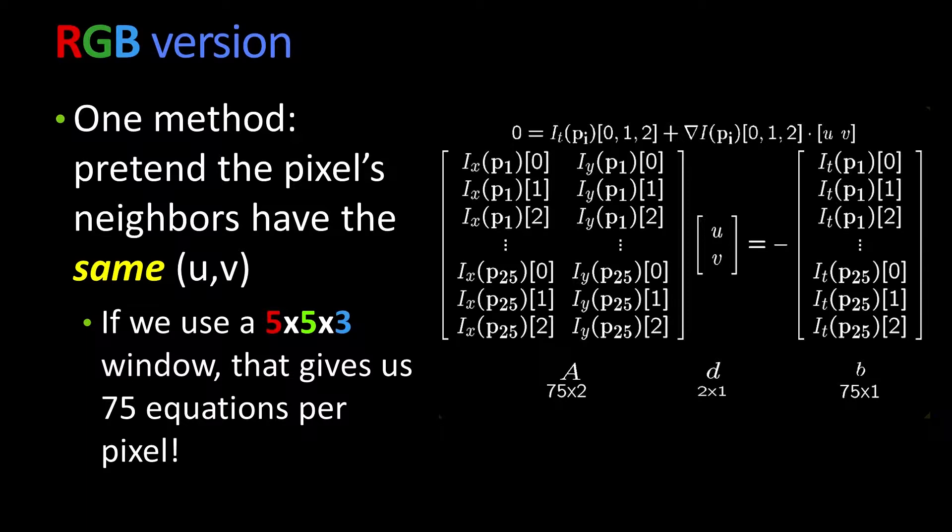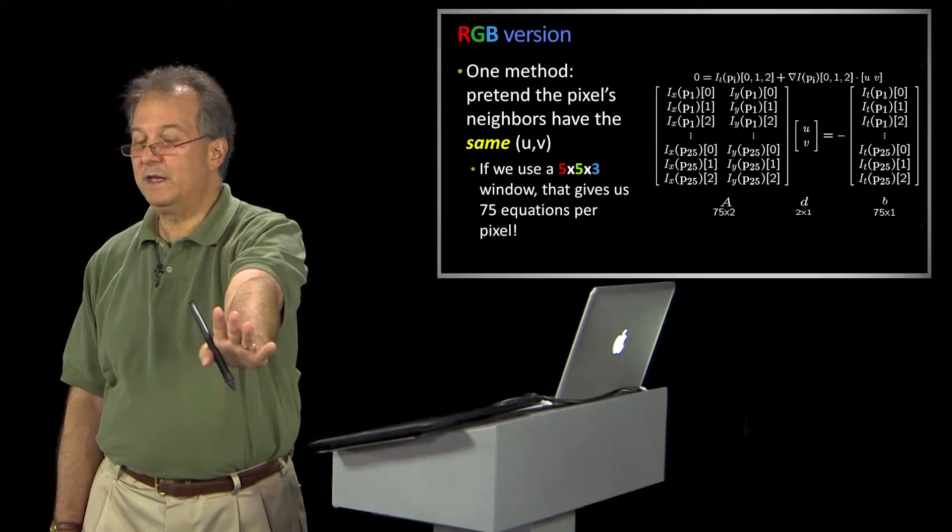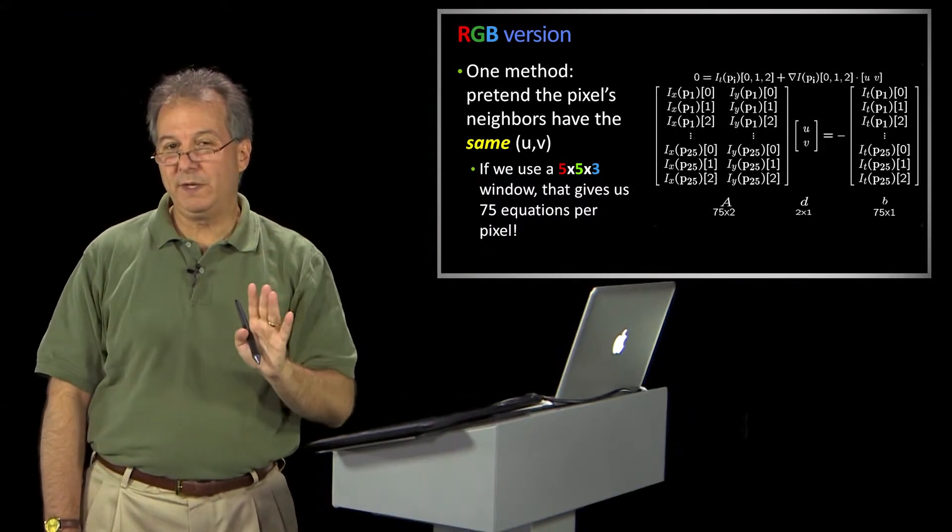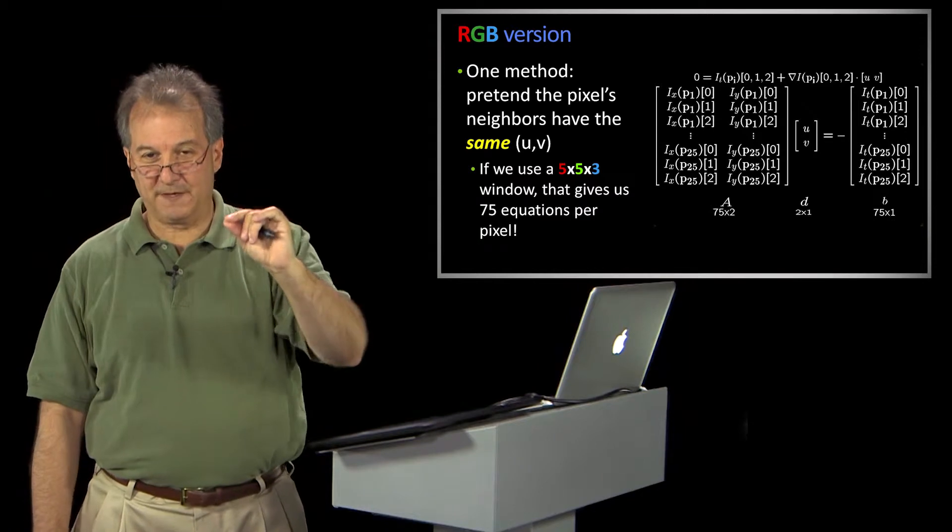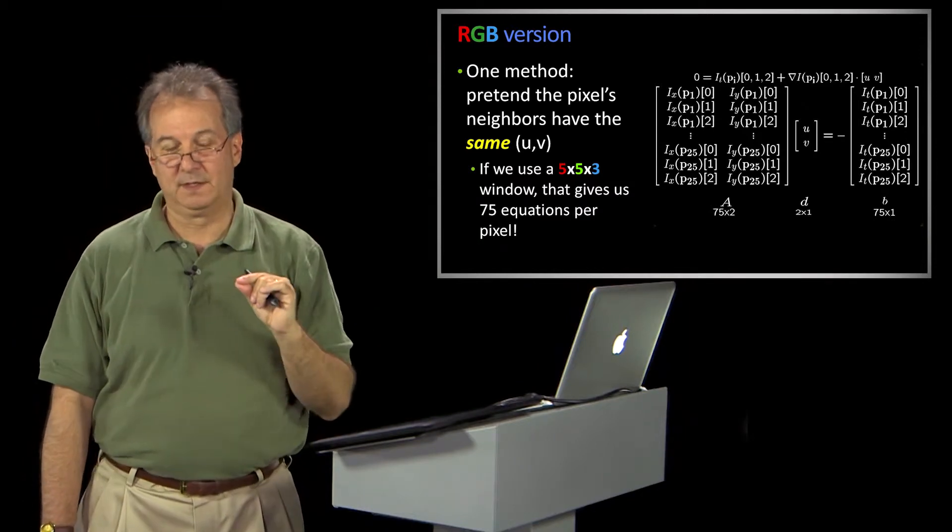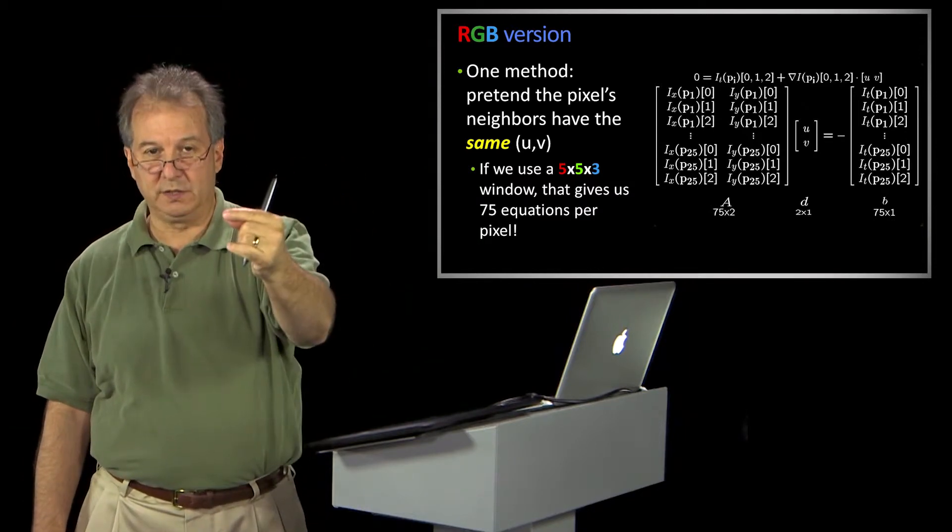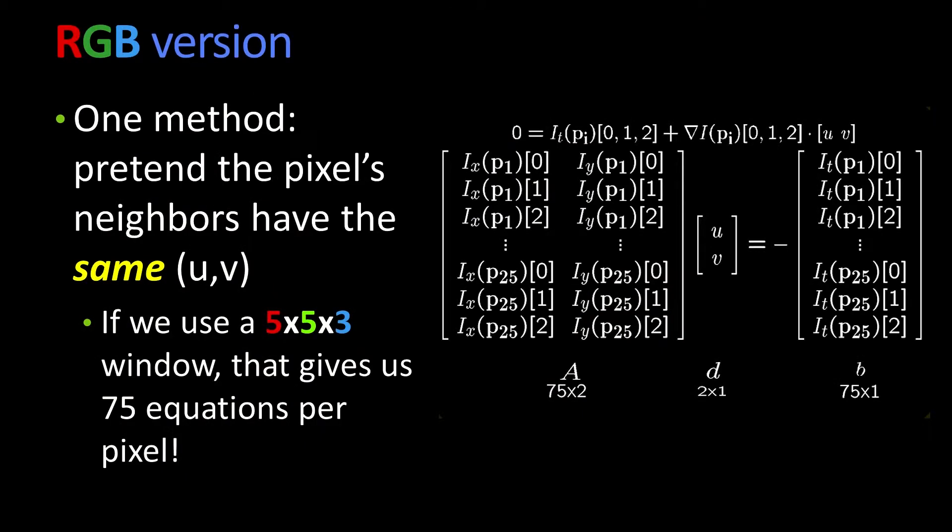Now, if you're really shrewd, you might say, wait a minute, wait, wait, wait. Suppose my window was only a single pixel. You told me, Professor Bobic, that we had this problem, okay? That we had one equation and two unknowns. But with R, G, and B, I now have three equations and two unknowns. Can't I solve it?